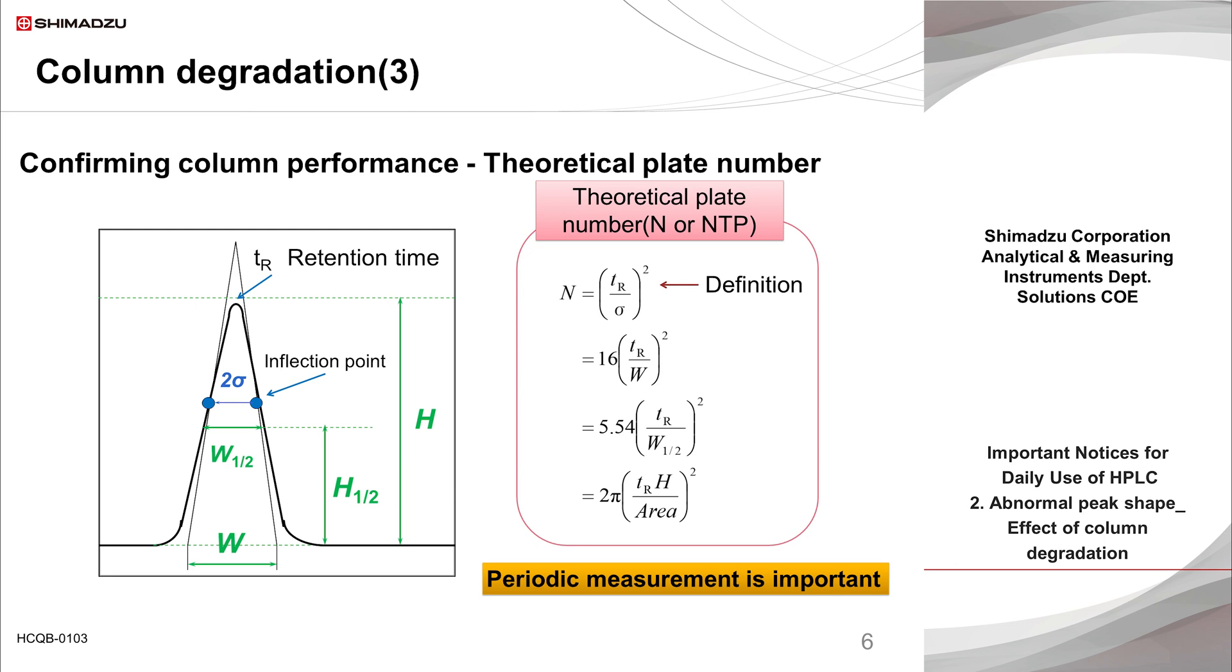Using the theoretical plate number allows for quantitative evaluation of the column performance. For example, a measurement of 10,000 plates for a caffeine peak under certain analytical conditions when the column is brand new, and 7,000 plates after one year of use shows a certain degree of degradation over time.